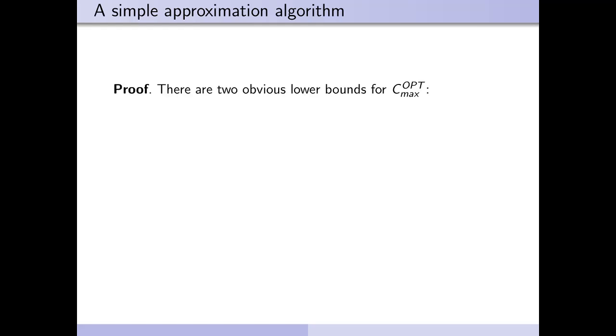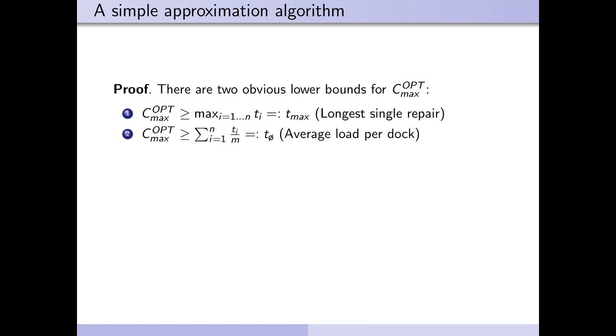There are two obvious lower bounds for it. The first is the maximum repair time. This means the longest single repair, because each repair has to be completely handled by one dock at some point. The second is the sum of all repair times divided by the number of docks. In other words, the average load per dock. This one might be a little less obvious than the first one. It would be the optimal time, if repairs could be cut up and divided among the docks, as each repair has to be done at some point, but we can't do that here, so the optimal solution can at least never be better than that.